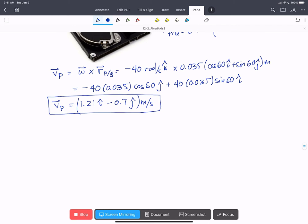To find the acceleration of P, we'll write down our fixed axis rotation acceleration equation. That's alpha cross R, P with respect to Q, minus the scalar omega squared times the vector R, P with respect to Q.